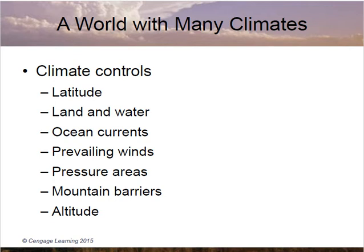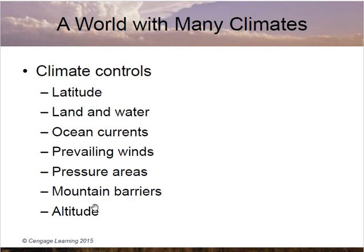Pressure areas are another factor. The global pressure zones show that low pressure zones are located at the equator and at 60 degrees north and south, while high pressure zones are at 30 degrees north and south and at the poles. Near a low pressure zone you'll experience higher amounts of precipitation, whereas near high pressure zones you'll experience low amounts of precipitation. Mountain barriers can also provide a barrier between different winds and precipitation, creating windward versus leeward sides and rain shadows on the leeward sides of mountains.